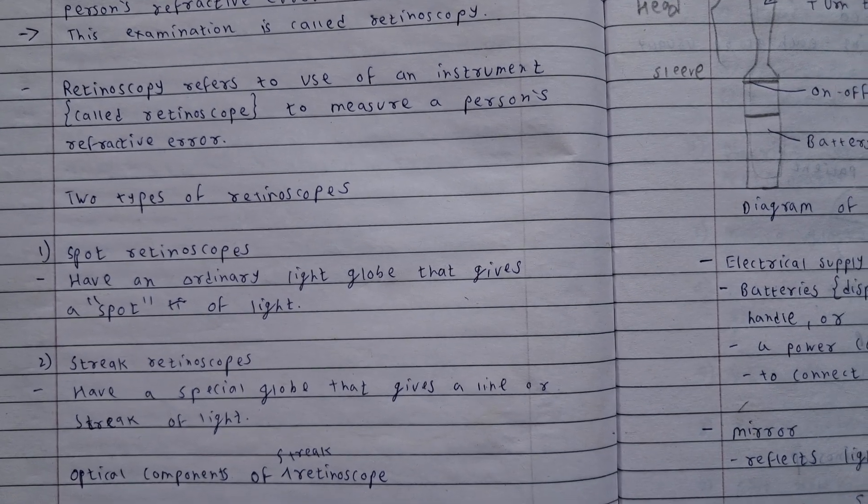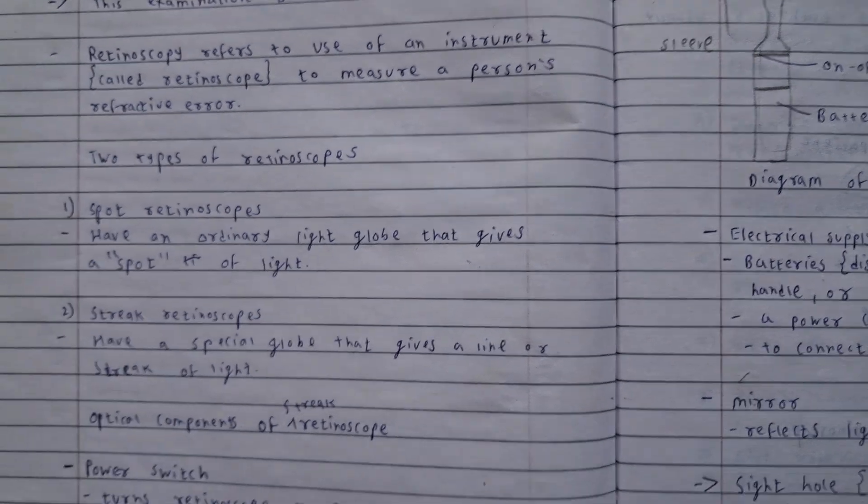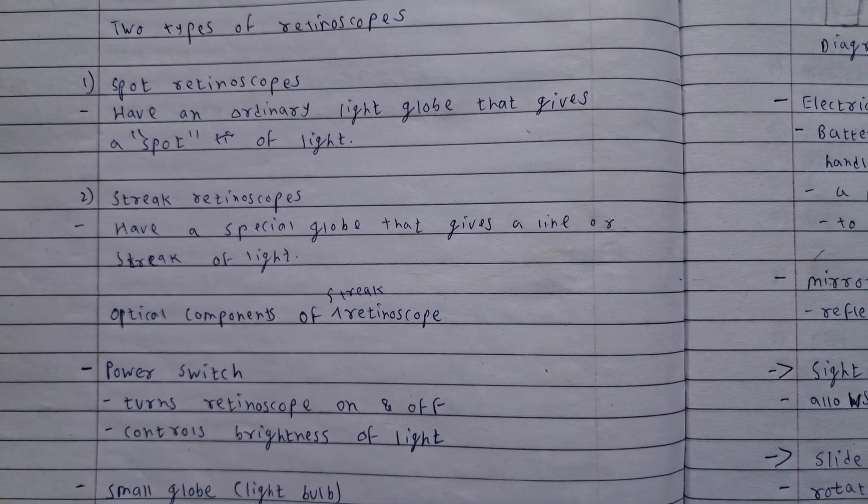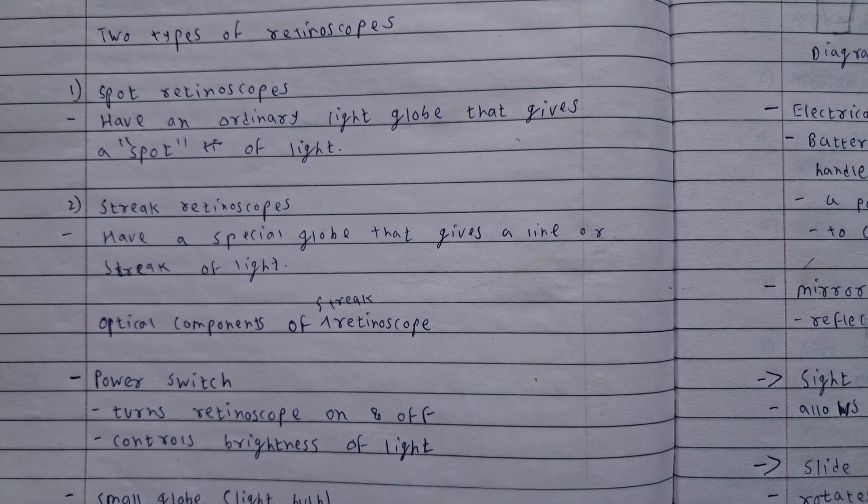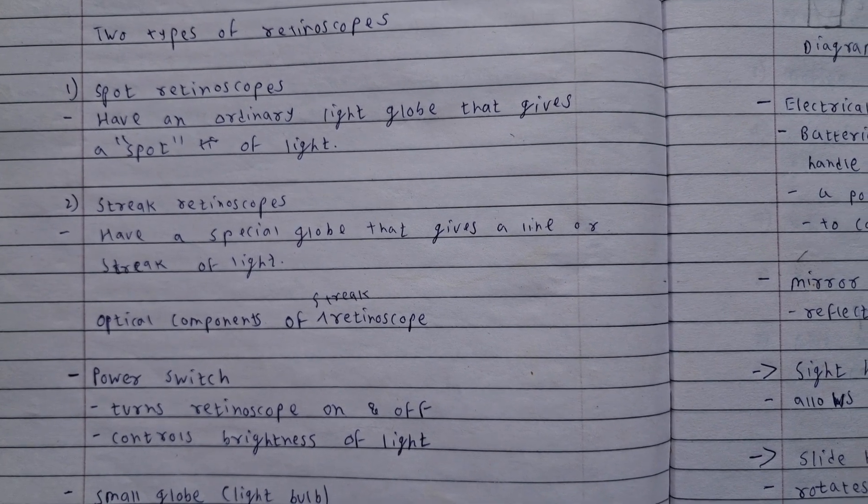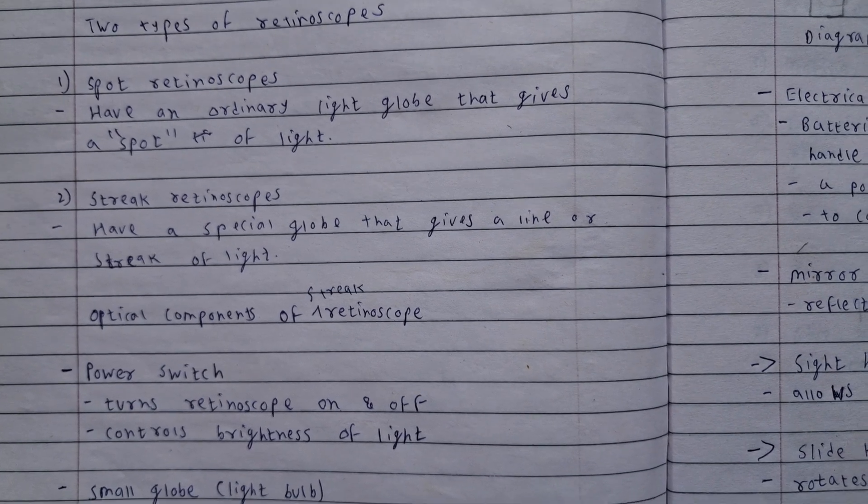Two types of retinoscopes are there: spot retinoscope and streak retinoscope. Spot retinoscope has an ordinary light globe that gives a spot of light. Streak retinoscope has a special globe that gives a line or streak of light.